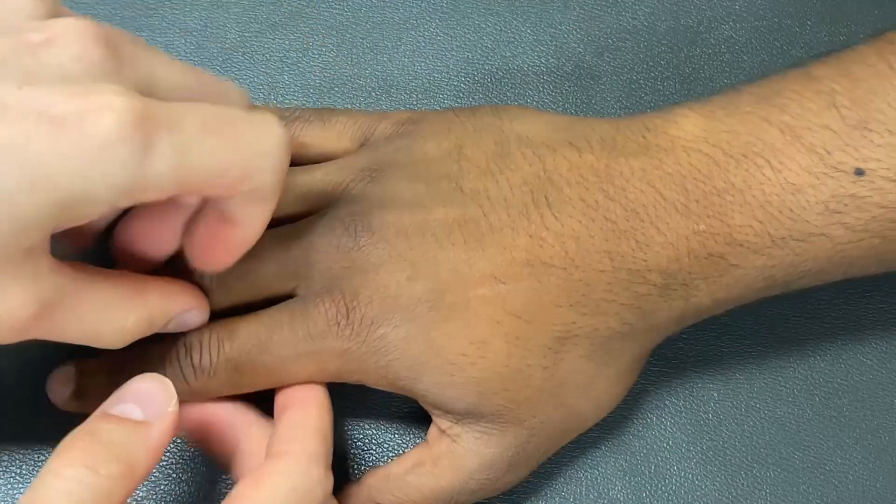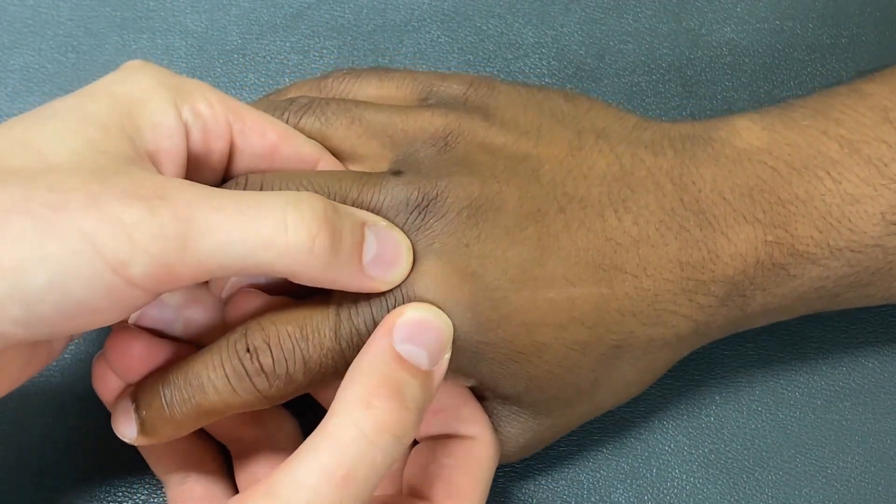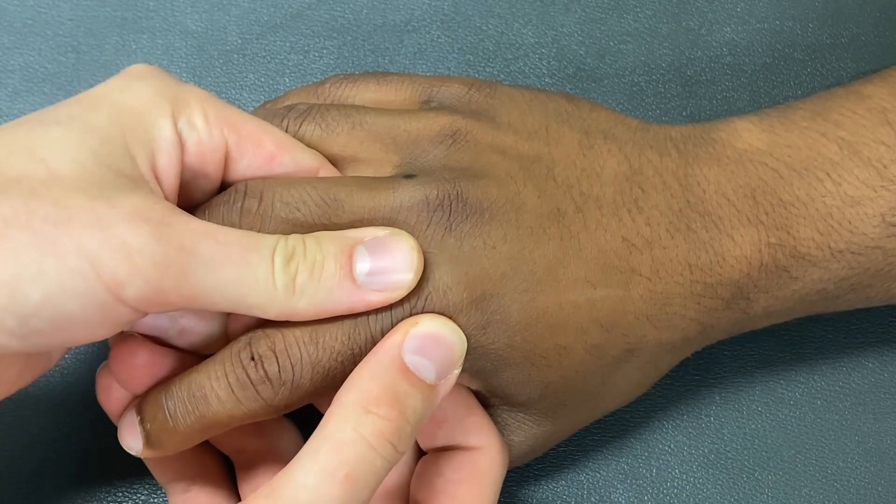For the MCPs, again use your thumbs to find the joint line and with one thumb on either side of the joint, alternate between applying pressure and feeling for bulging.